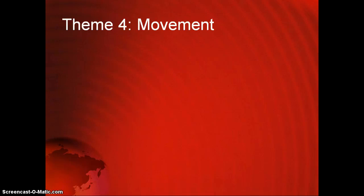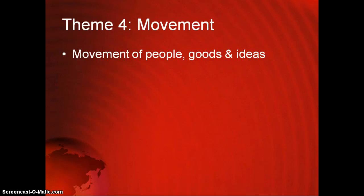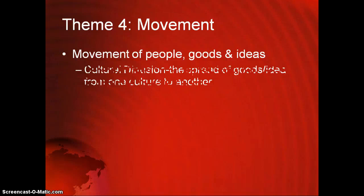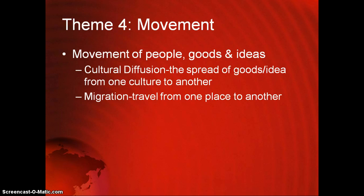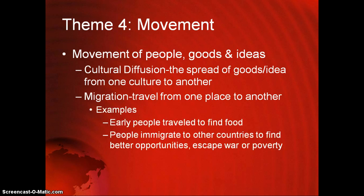Theme four is movement, and this includes the movement of people, goods, and ideas. A key Global History term is cultural diffusion — the spread of goods and ideas from one culture to another as people move. Migration is traveling from one place to another; both people and animals migrate. For example, early people traveled out of Africa to find food, which is why all seven continents are populated.